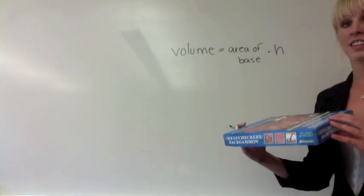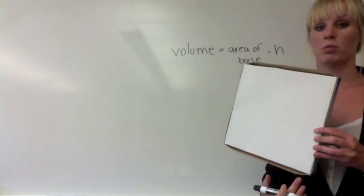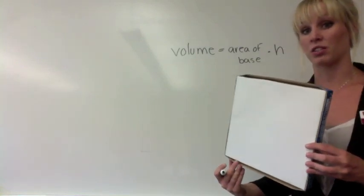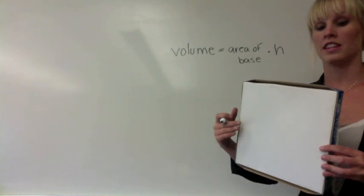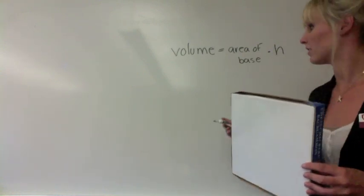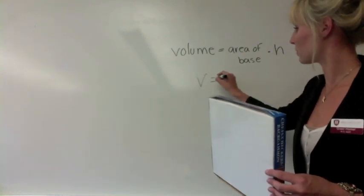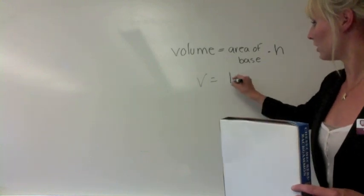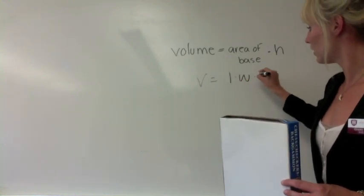Now, in this case, the area of the base would be - the base has a rectangular shape, so it would be length times width, and then you multiply it by the height. So the volume of this rectangular prism would be the length times the width times the height.